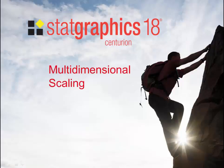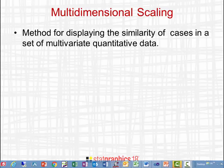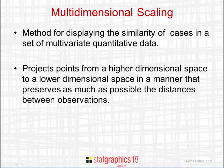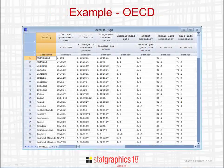The topic of this video is multidimensional scaling, which is new in StatGraphics 18. Multidimensional scaling is a method for displaying the similarity of cases when you have a set of multivariate quantitative data. It projects points from a higher dimensional space to a lower dimensional space in a manner that preserves as much as possible the distances between pairs of observations. An important part of the output is a low dimensional map used to visualize the information in the data.